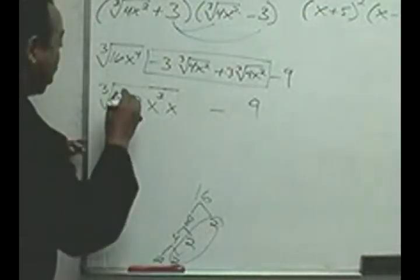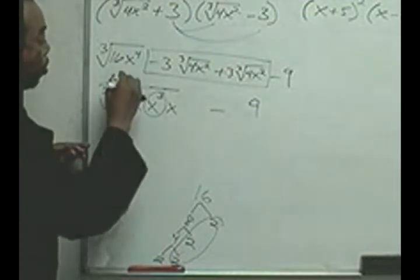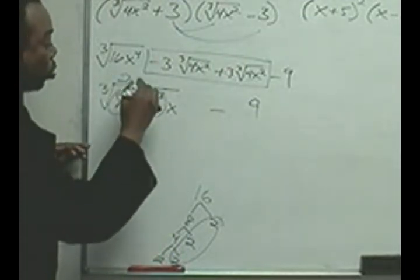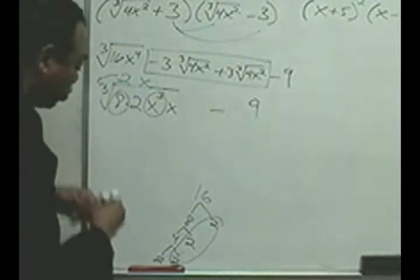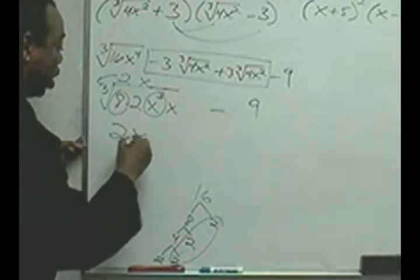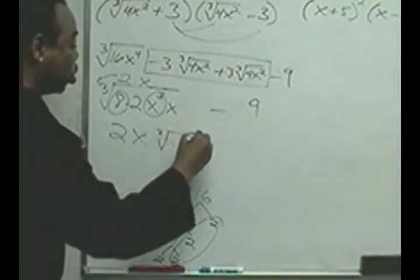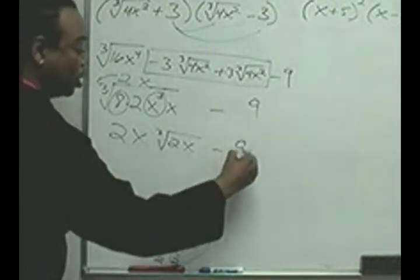So, here we can simplify the 8, and we can simplify the x cubed. The 8 will simplify into a 2, whereas the x cubed will simplify into an x. And that will all go up front. So, the final answer will be 2x times the cube root of 2x, and then minus 9.